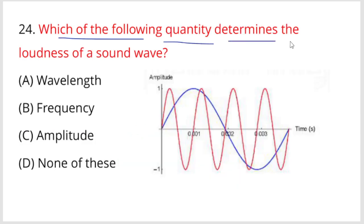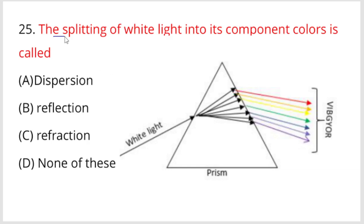Next, which of the following quantities determines the loudness of a sound wave? Amplitude determines the loudness. Option C is your right answer. Next, the splitting of white light into its component colors is called dispersion. Option A is your right answer.